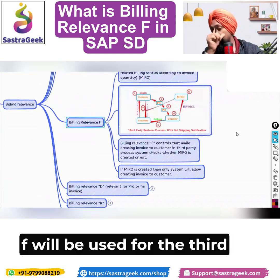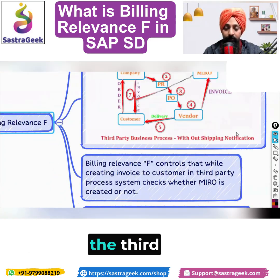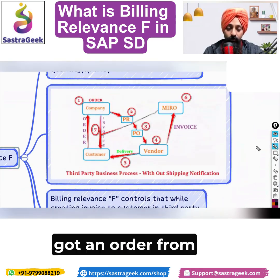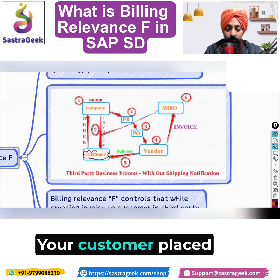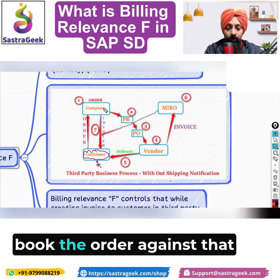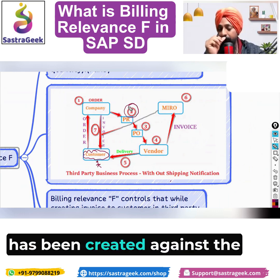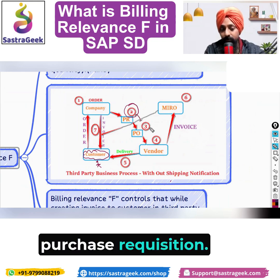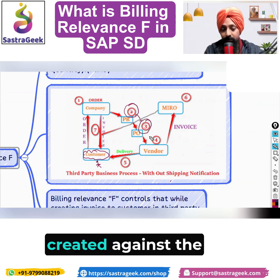Billing relevance F is used for the third-party business process. In the third party, you receive an order from your customer. You book the order, against which a purchase requisition has been created. Against the purchase requisition, a purchase order has been created.